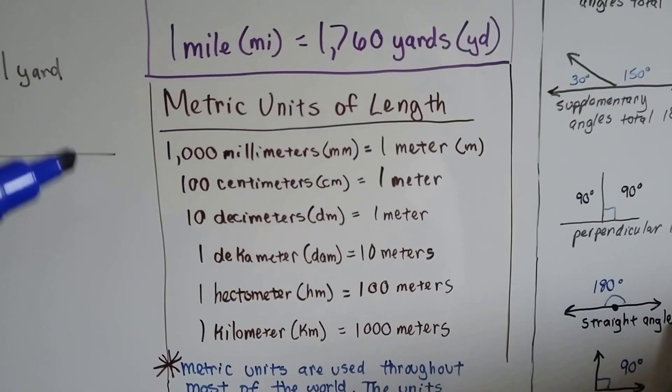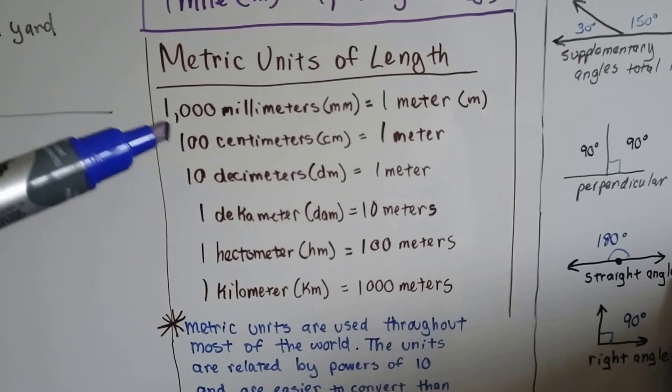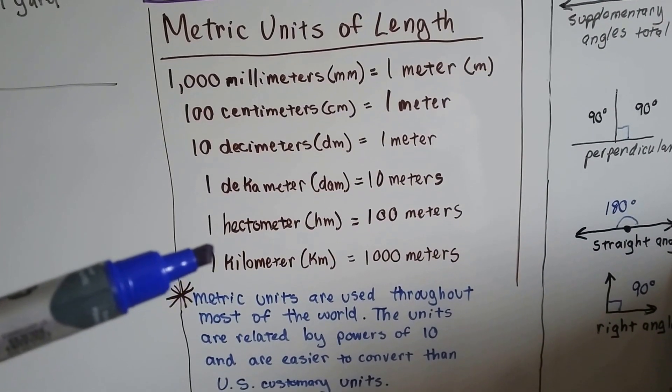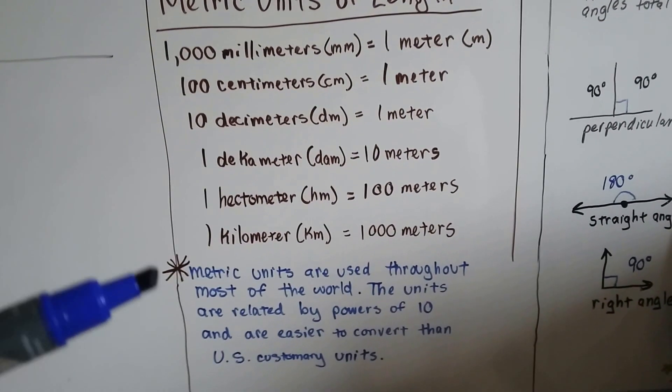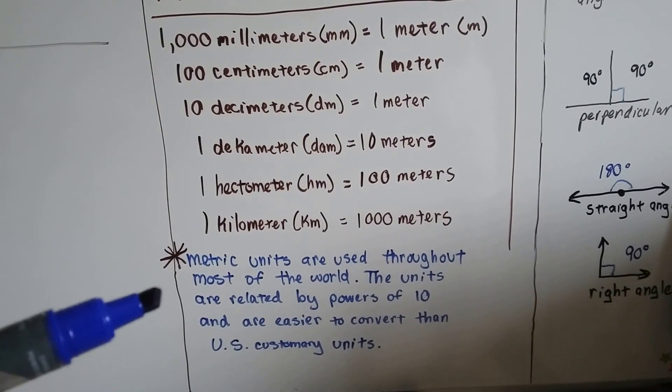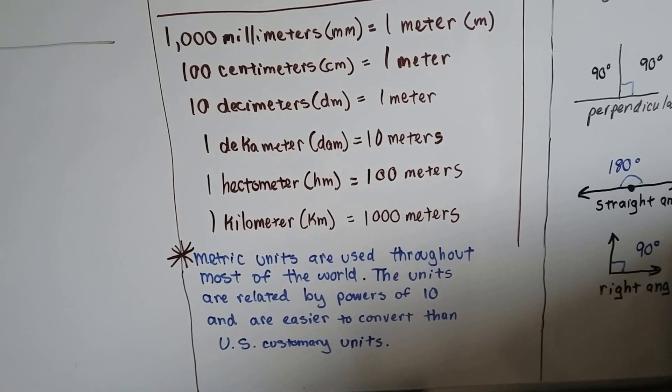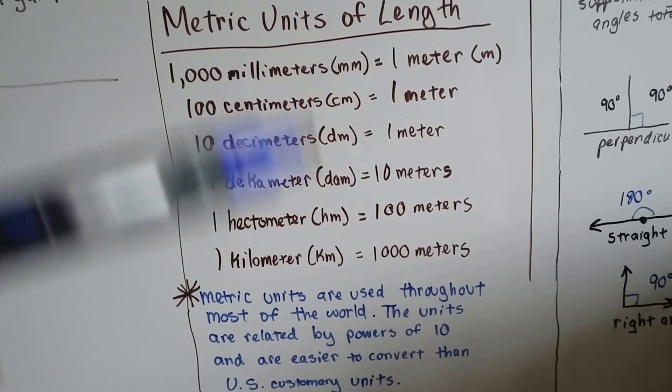And then the metric units are millimeters, centimeters, decimeters, decameters, hectometer, and kilometer. Now the metric units are used throughout most of the world. And they're related by powers of 10. And they're easier to convert than the U.S. customary units because they're all based on 10.